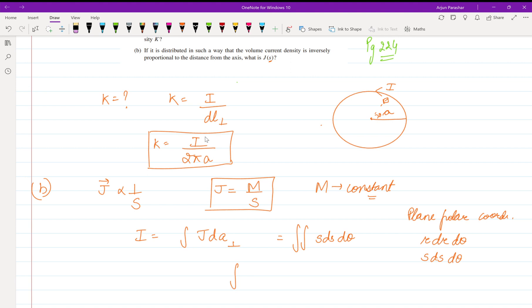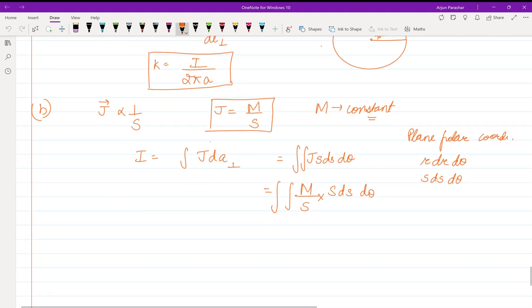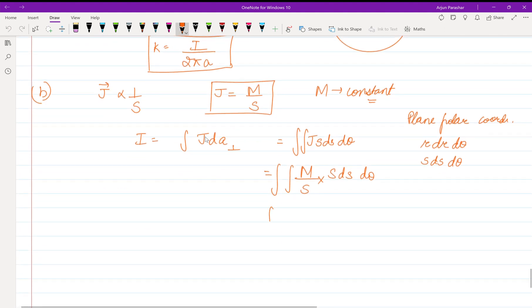Integrating, and we have J also. Putting the value of J: M upon S into S dS dθ. As you know that θ is from 0 to 2π for a full circle. S cancels, so we get M dS and dθ.